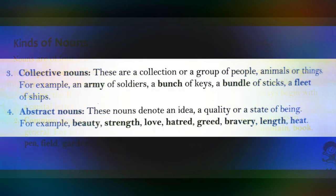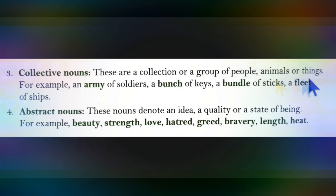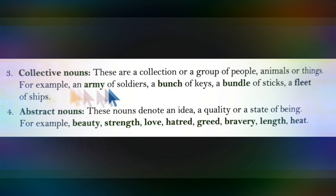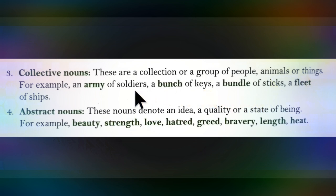The next type of noun is collective noun. Collective nouns refer to a collection or group of people, animals or things. For example, 'an army of soldiers' — we are not talking about one soldier but a group of soldiers. Another example is 'a bundle of sticks,' which contains more than one stick.